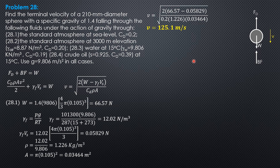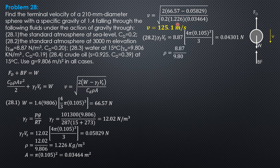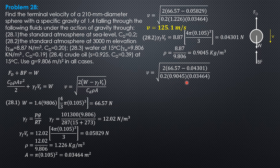For the second case — standard atmosphere at 3,000 meters elevation — gamma of air is 8.87 N/m³. Gamma times volume of sphere equals 8.87 times (4/3)π times 0.105³ = 0.04301. The density of air at that elevation is 8.87 divided by 9.806 = 0.9045 kg/m³. Substituting: V = √(2 × (66.57 − 0.04301) / (0.2 × 0.9045 × 0.03464)), giving a terminal velocity of 145.7 meters per second.